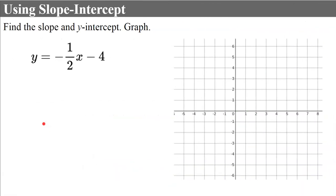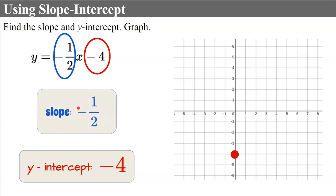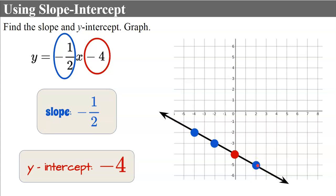Now let's use slope-intercept form to graph a line. I can identify that negative 4 is my y-intercept, so I'll plot that point on the graph. My slope is negative one-half. Since it's negative, one direction — rise or run — has to be negative: I can rise 1 and run negative 2, or rise negative 1 and run positive 2. Using these to graph additional points, I can draw my line.